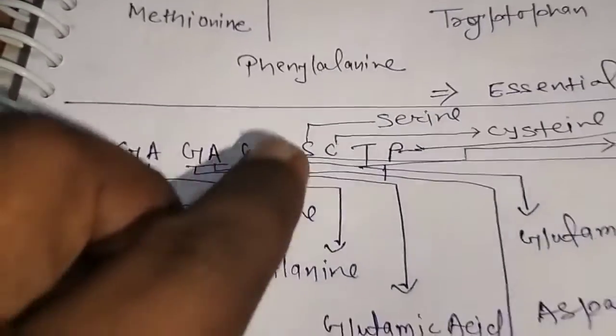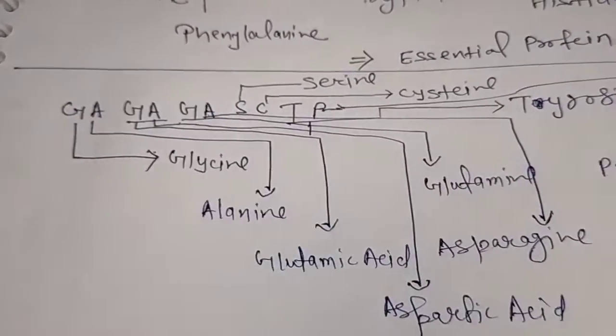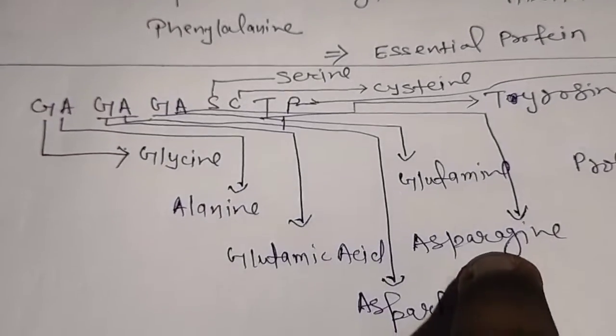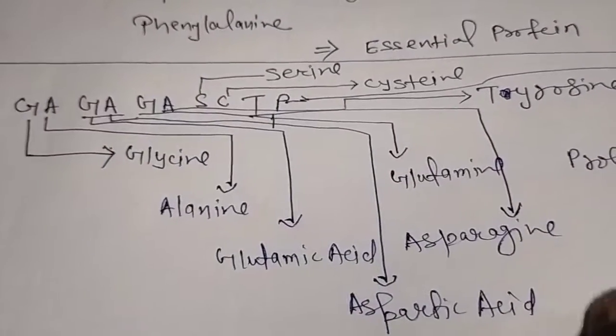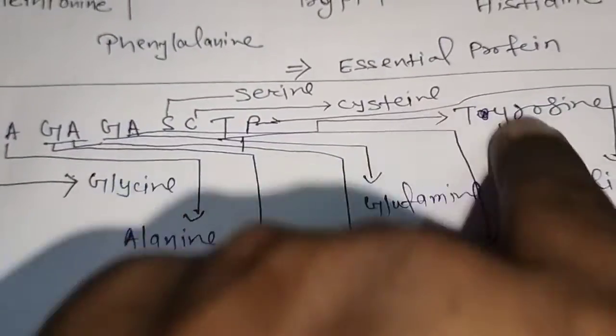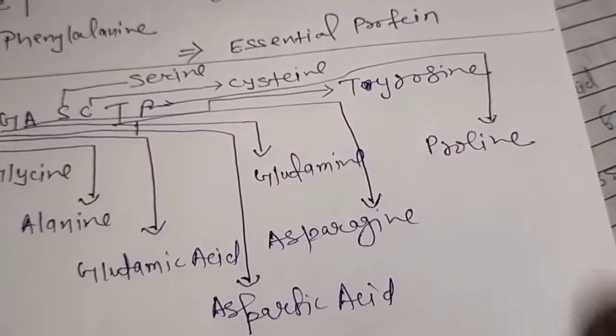A means alanine, G means glutamic acid, A means aspartic acid, G means glutamine, A means asparagine, S means serine, C means cysteine, T means tyrosine, P means proline.